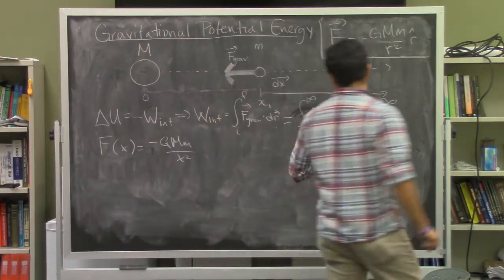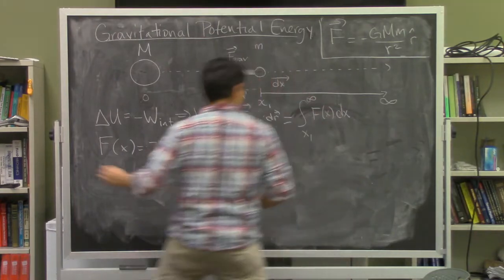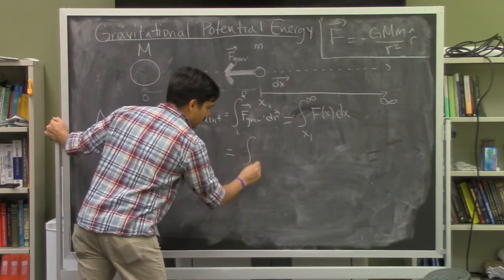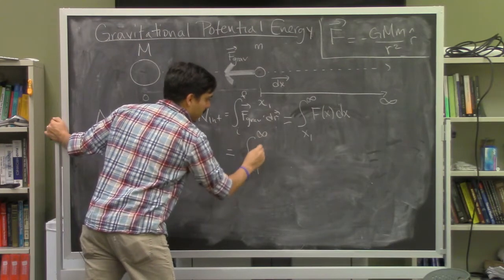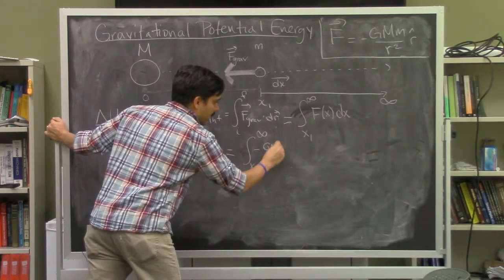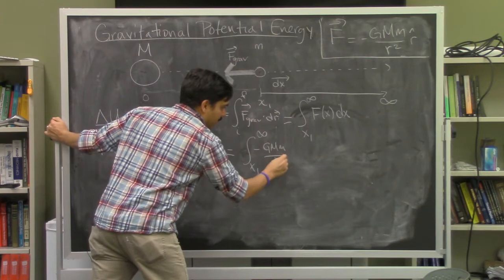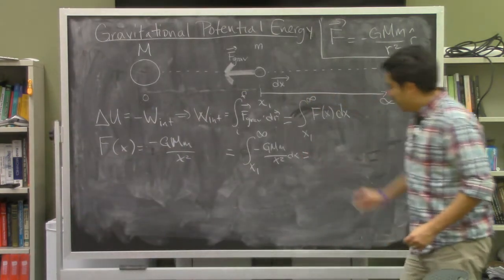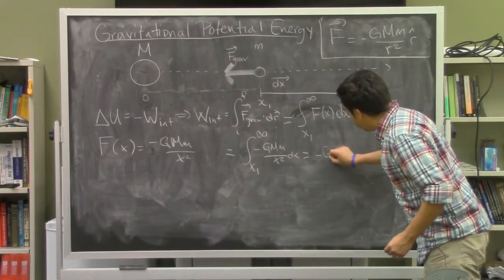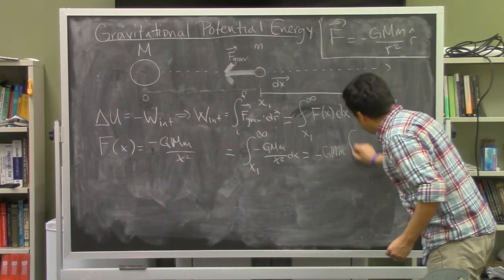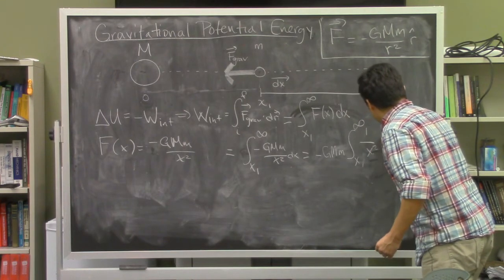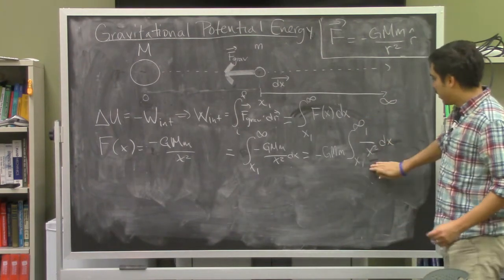Now we'll finish this calculation. The internal work is W = -∫[x₁ to ∞] (-GMm/x²) dx. We'll take out the constants -GMm and integrate the function of x from x₁ to infinity.